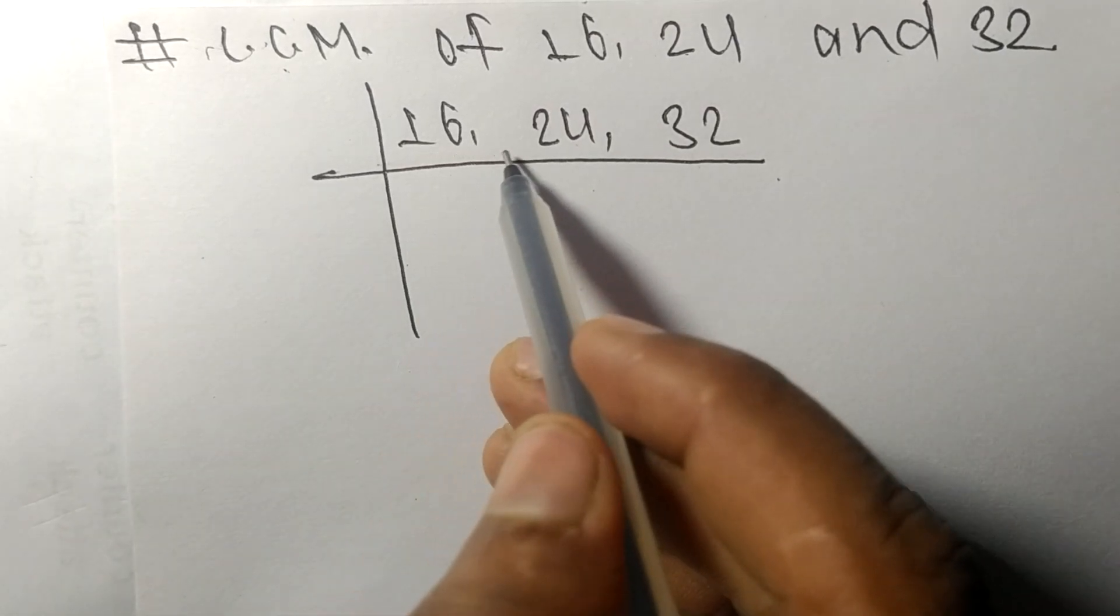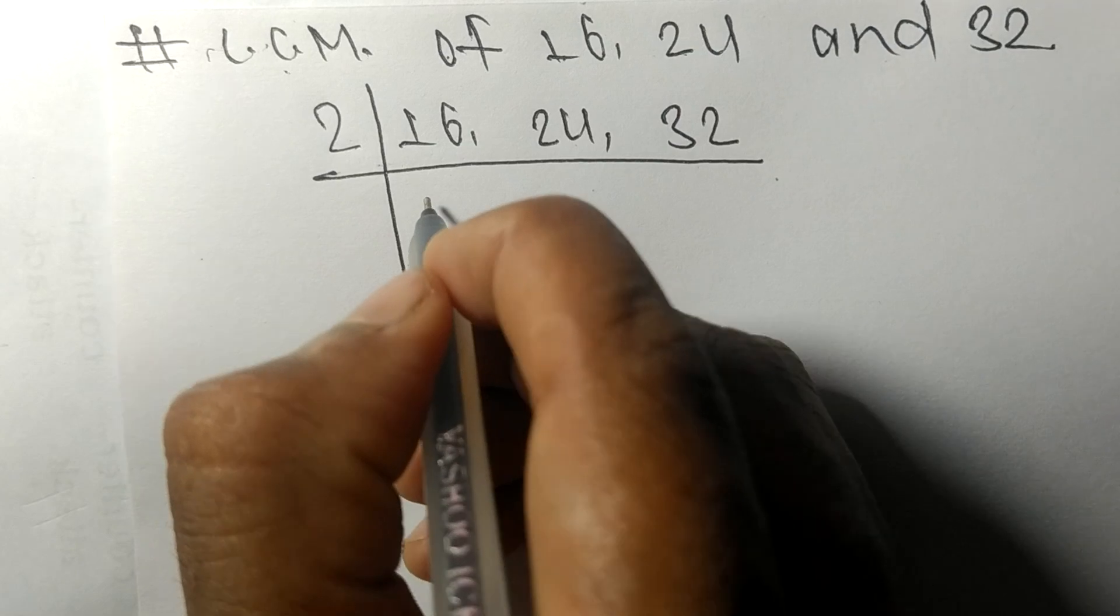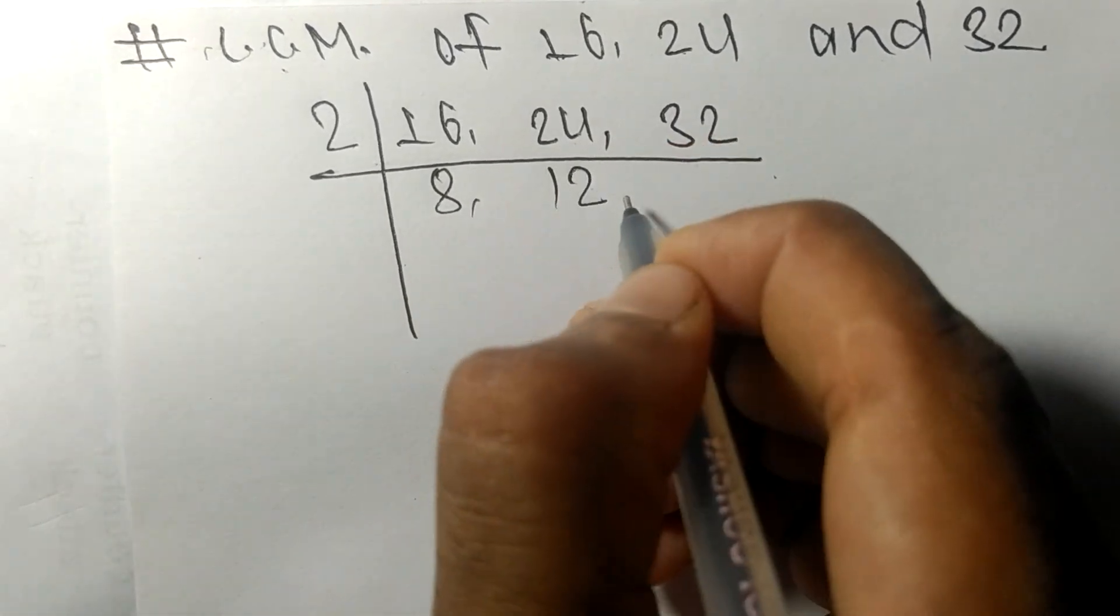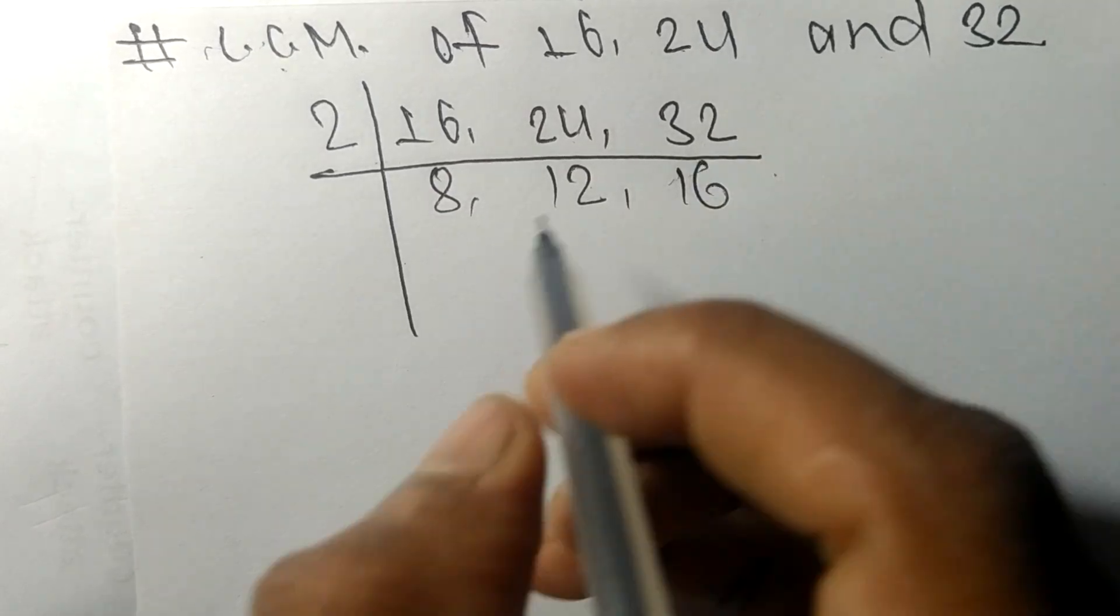These all numbers are divisible by 2. 2 times 8 is 16, 2 times 12 is 24, 2 times 16 is 32.